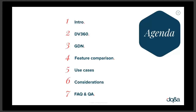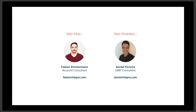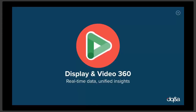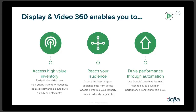We'll take you through some considerations if you're thinking about either using DV or you want to use both platforms. There's plenty of things to take into account before you dive into it. Closing off with FAQ and some Q&A at the end. So if there's any topic that you would like to further discuss, feel free to drop us an email so we can have that conversation separately. So first I'll take you through DV360. DV360 enables you to access high value inventory, reach your audience, and drive performance through automations. I usually take this slide because I feel that these are the three pillars that the system is based upon.